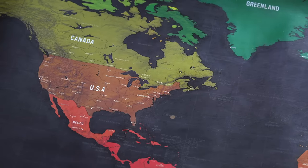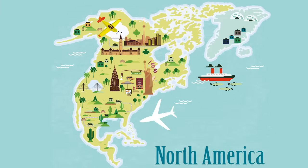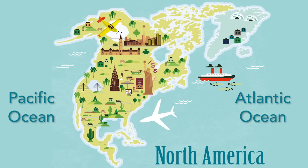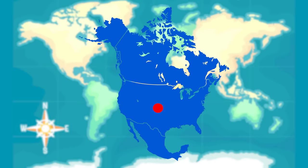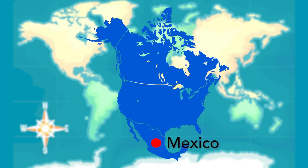If you live in the United States, Canada, or Mexico, you live on the continent known as North America. North America is bordered by the Atlantic Ocean on the east and the Pacific Ocean on the west. See that red dot? That dot sits right in the United States, which is right in the middle of North America. Canada is also part of North America and lies directly north of the United States. And now the dot is smack dab in the middle of Mexico, which is also part of North America.